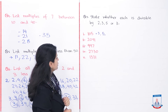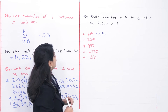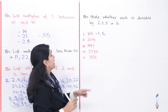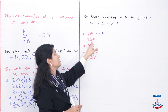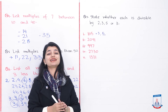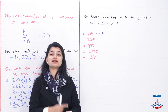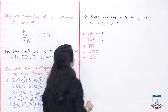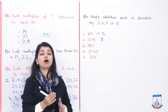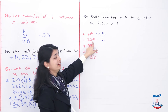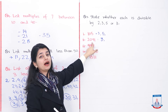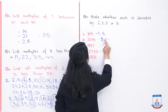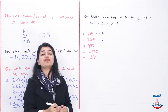Next, check 2091. It is not divisible by 2 — the last digit is odd. Check by 3: 9 plus 1 plus 0 plus 2 equals 12. Is 12 divisible by 3? Yes, 3 fours are 12, so 2091 is divisible by 3. It is not divisible by 5. Check by 11: alternating sum — 2 plus 9 is 11, and 1 plus 0 is 1; 11 minus 1 is 10. Since 10 is neither 0 nor 11, this is not divisible by 11.